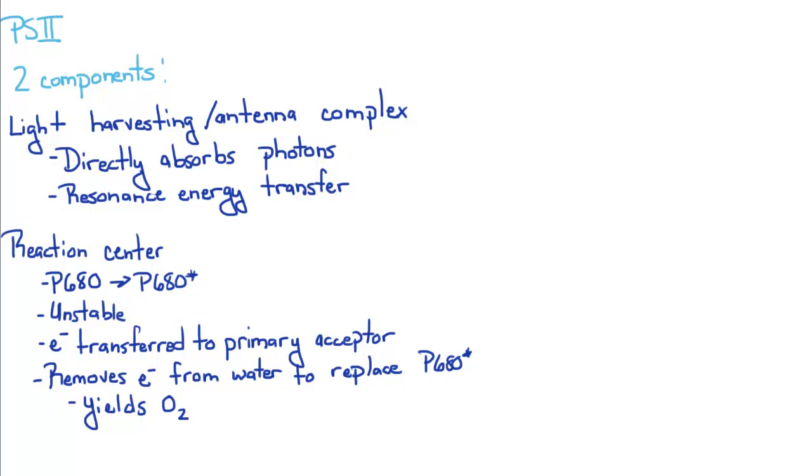There's a light-harvesting complex or antenna complex. This is going to directly absorb photons and transfer energy from resonance or transfer double bonds, electrons, all that good kind of stuff.